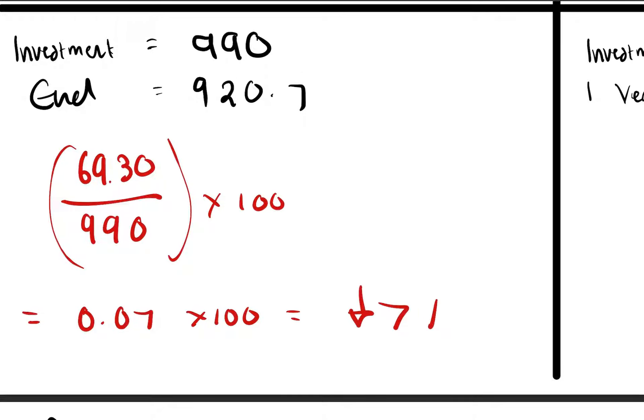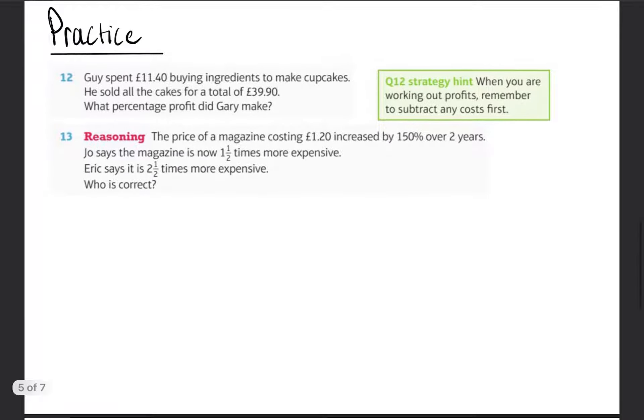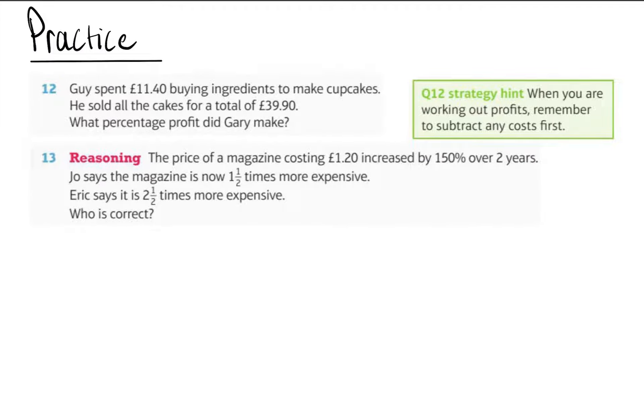Okay, have a go at the rest. And then we've got practice here, it's just wordy questions, the same thing. Guy spent £11.40 buying ingredients to make cupcakes. He sold all the cupcakes for £39.90. What profit did he make? So, original... ended...